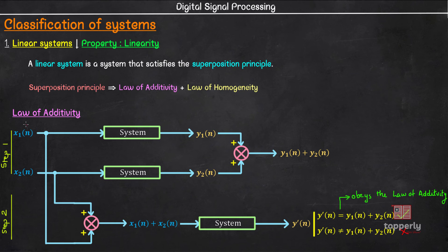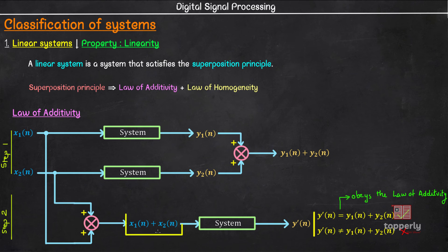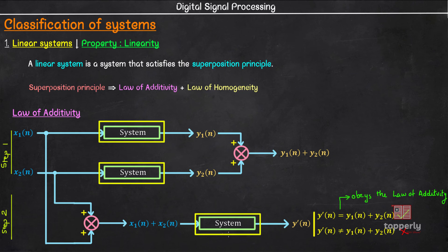To recap the law of additivity: first we provide two different inputs to the system and find the corresponding outputs, then we add those outputs to get the final result. Next, we add the inputs first and give the resultant sum as an input to the system. The corresponding output is y'(n). If y'(n) is equal to y1(n) plus y2(n), then the system is said to follow the law of additivity. An important point to note is that we keep the system the same in all these cases.